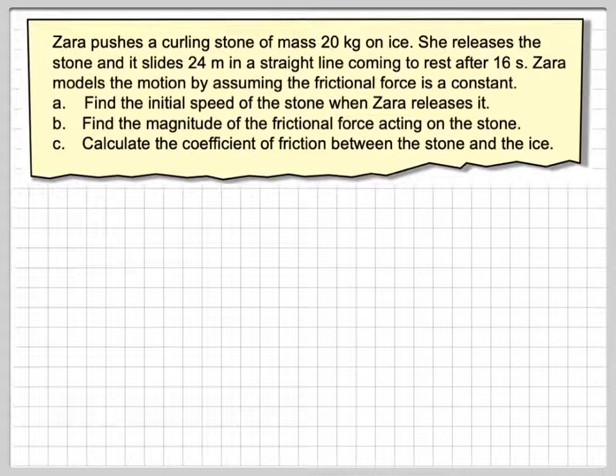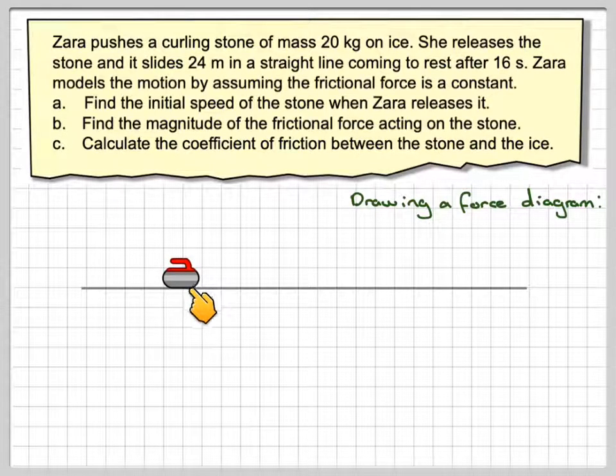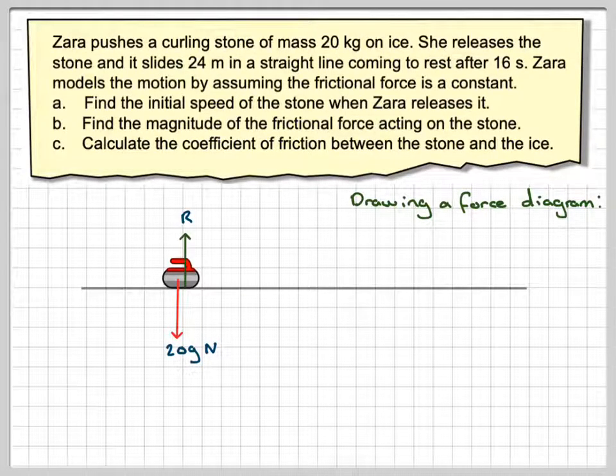Like all good mechanics questions, your first step should always be trying to draw a force diagram. So we have a curling stone here on ice. Now what are the forces acting on it? We have the weight 20g Newtons acting downwards and we have a normal reaction to that perpendicular to where it touches the surface. And then the only other force that acts on it is the frictional force and as it's moving it will be f is equal to mu r.